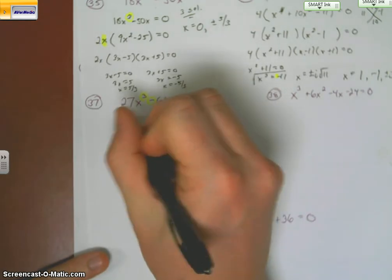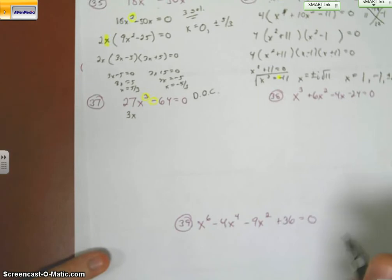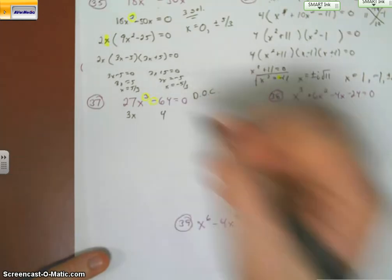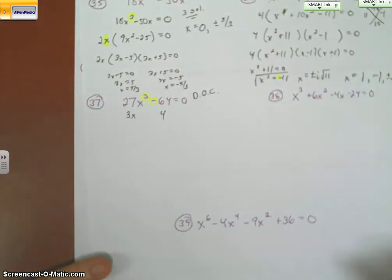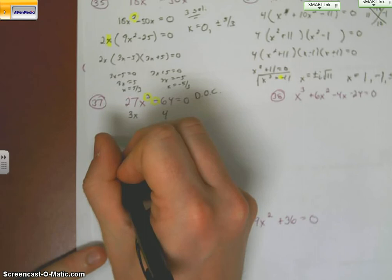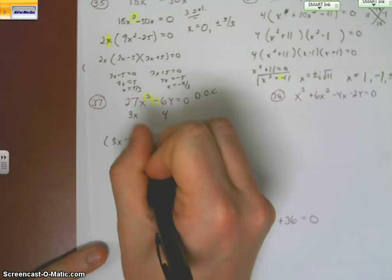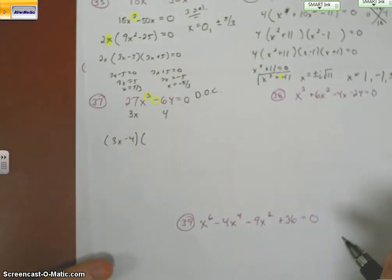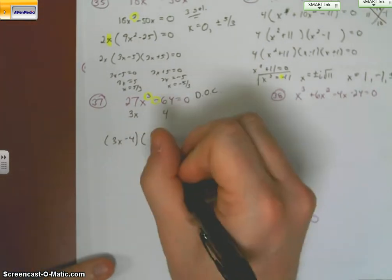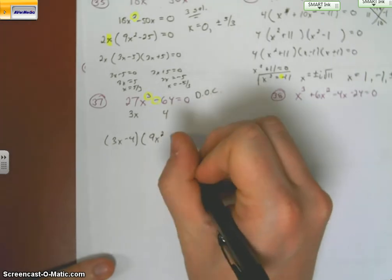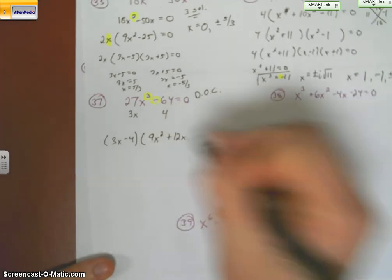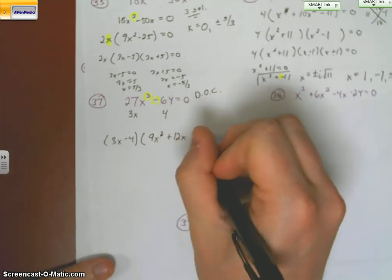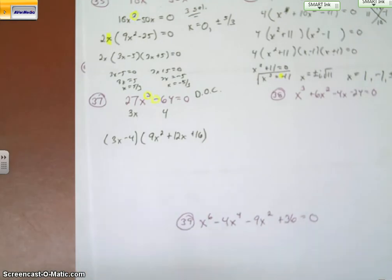Where 27 is a perfect cube of 3, x cubed is a perfect cube of x, and 64 is a perfect cube of 4. So it's a minus b. Then we square our a. We multiply our a and b. And then we square our 16.